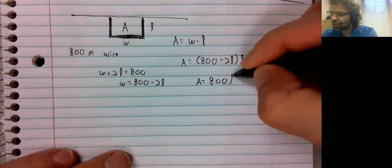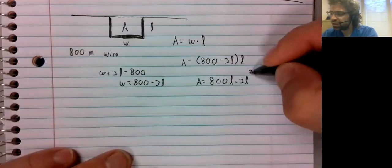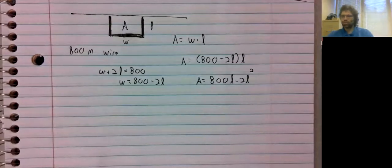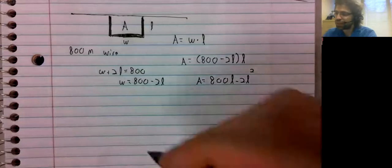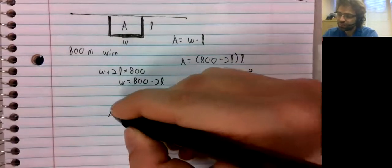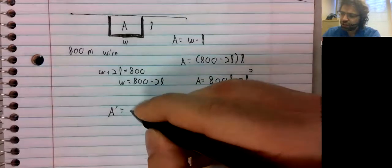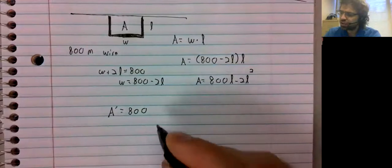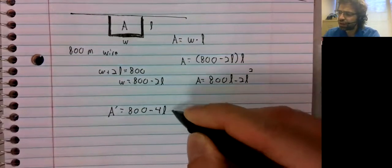We're going to have to take a derivative. Let's distribute. And we certainly don't want to use the product rule here if we can help it. And the derivative of the area is 800 minus 4L.